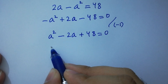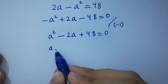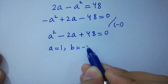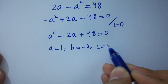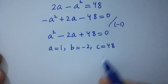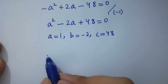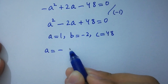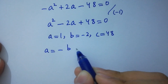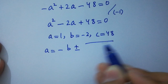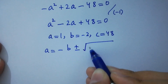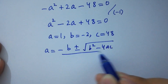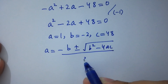By comparing with the standard quadratic form, we have a equal to 1, b equal to minus 2, and c equal to 48. Apply the quadratic formula: x equal to minus b plus or minus square root of b square minus 4ac over 2a.